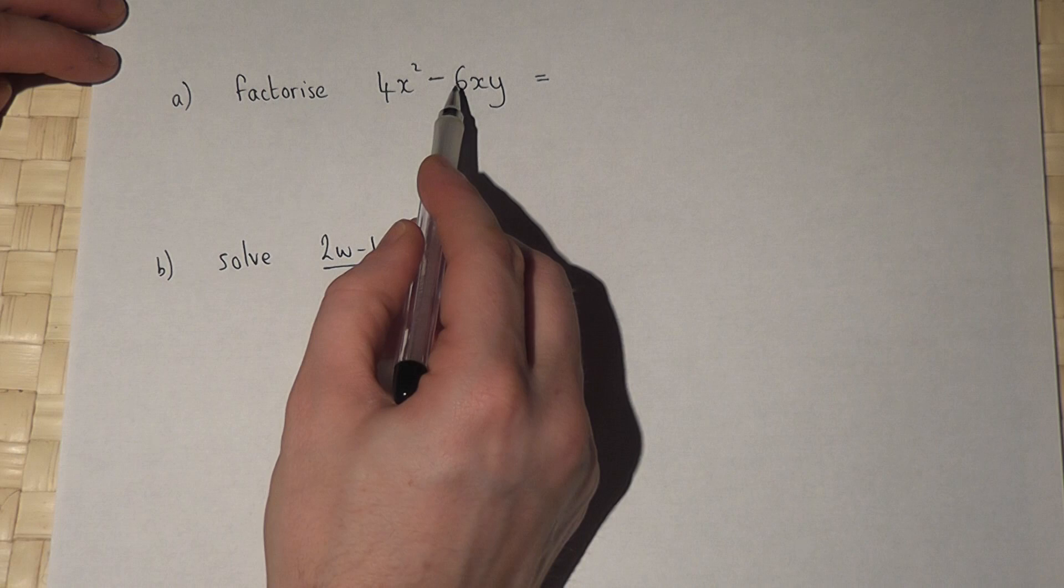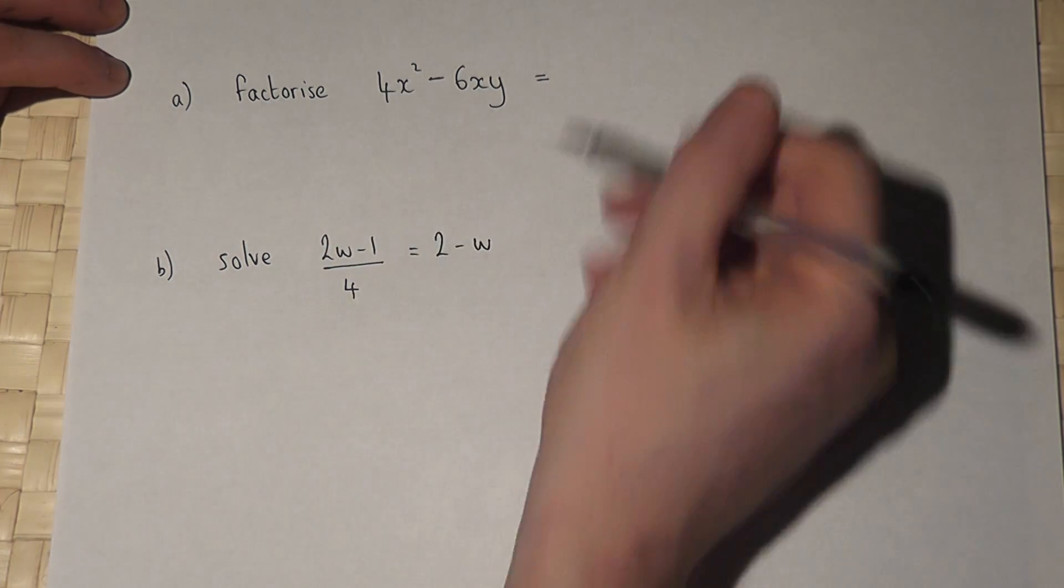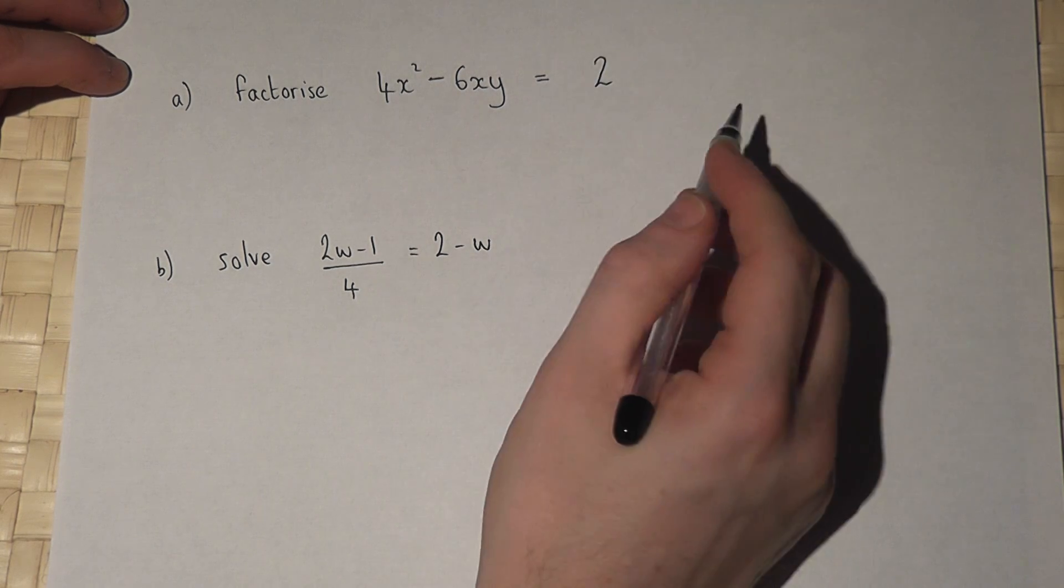If we look at the number first, then we know that 2 is the highest common factor of 4 and 6, so I can write a 2 down straight away.